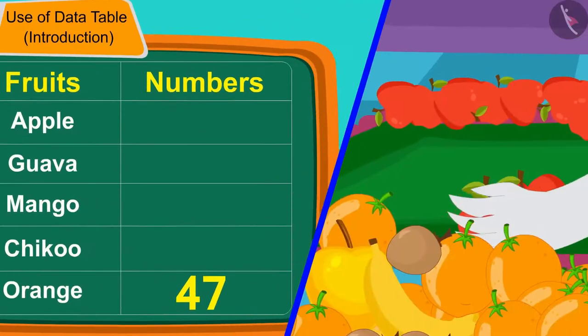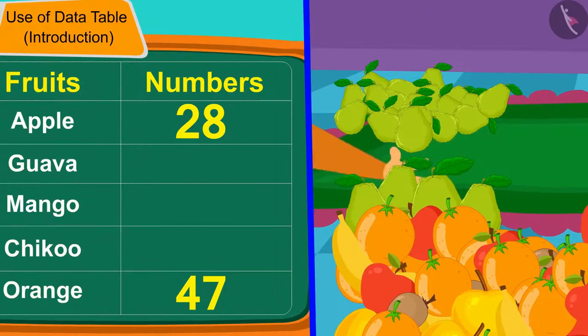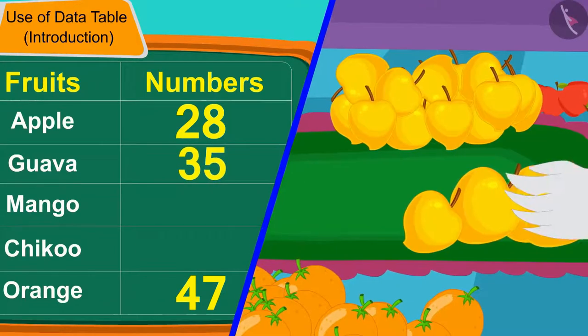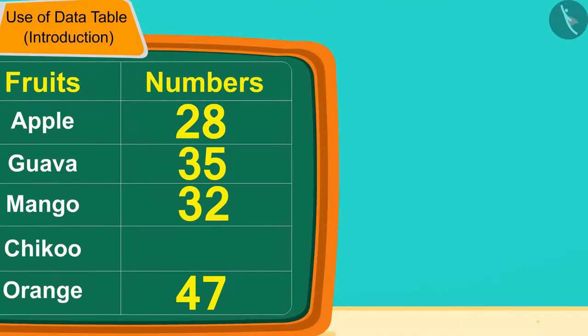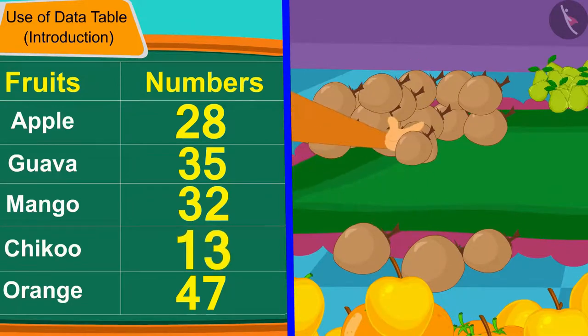Uncle and Chanda once again counted all the fruits and wrote their numbers in the table. The table is finally complete.